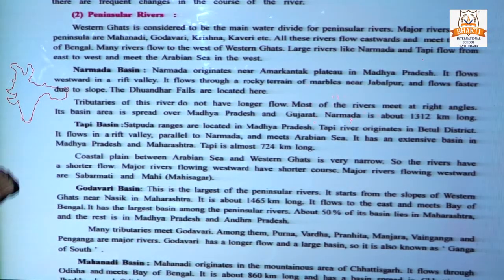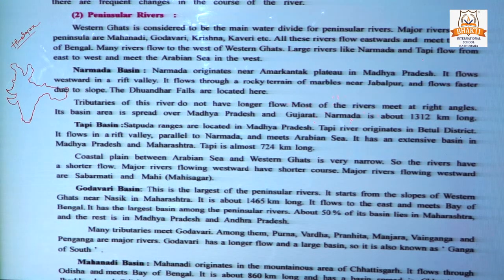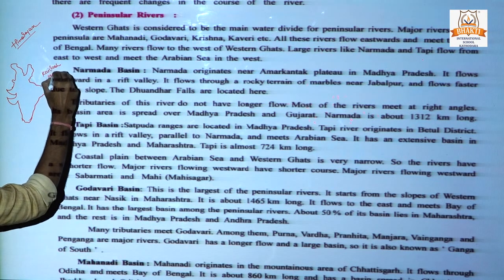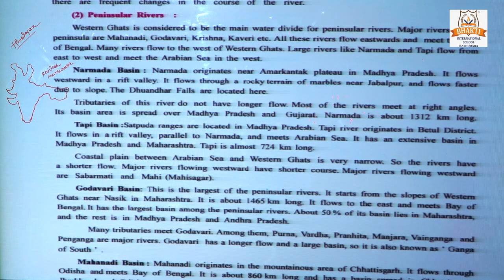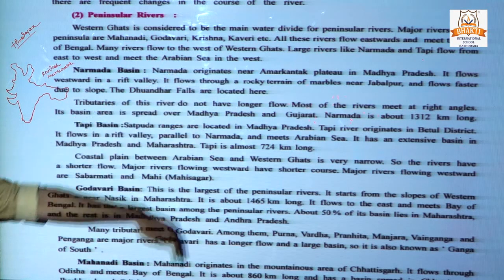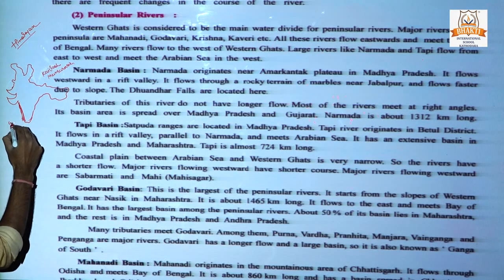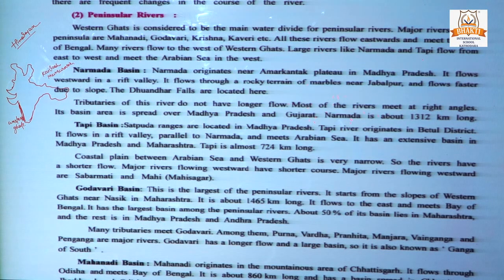Most of the Himalayan River systems originate from Kailash-Mansarovar, while the Peninsular River's originator is the Western Ghats. Most rivers of the Peninsular region originate from the Western Ghats.